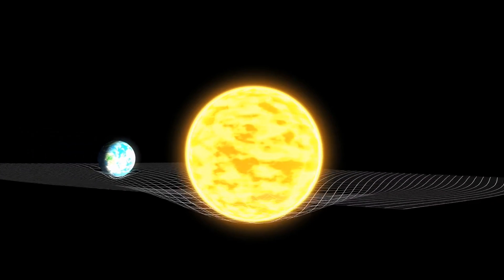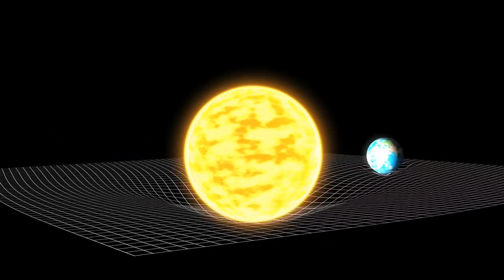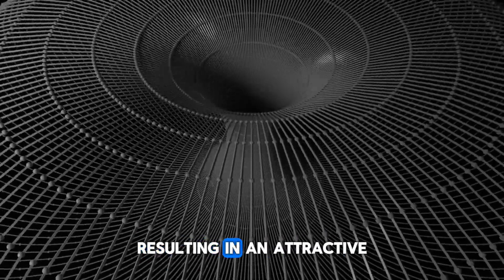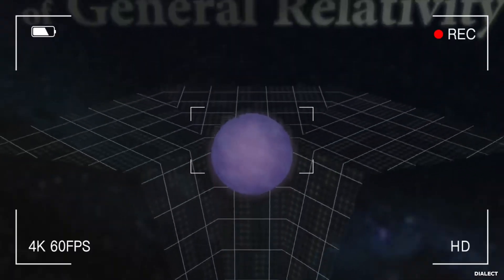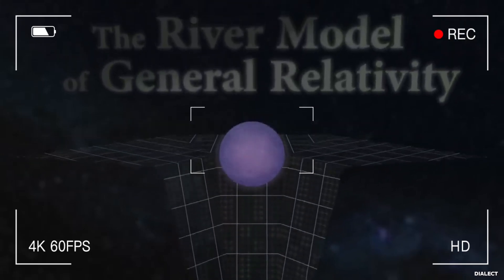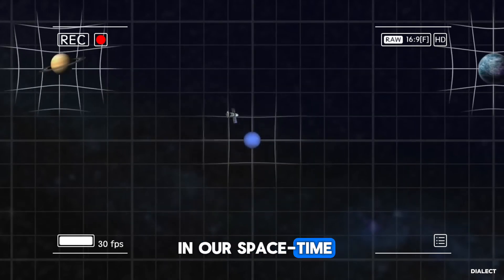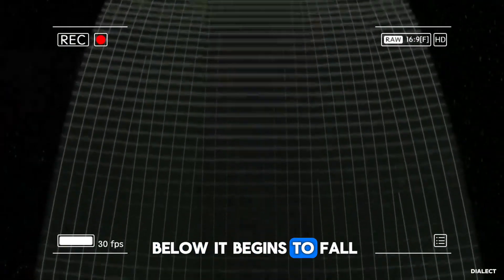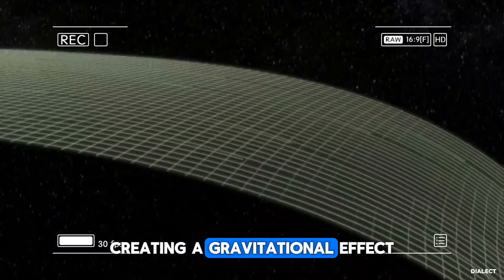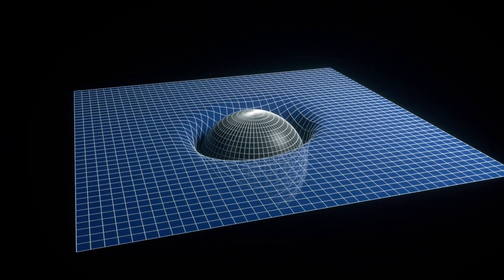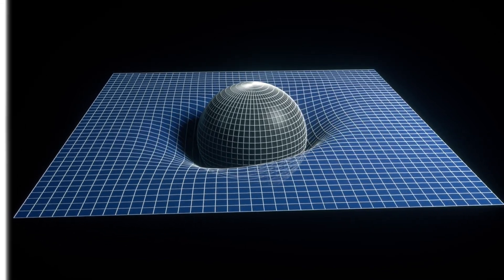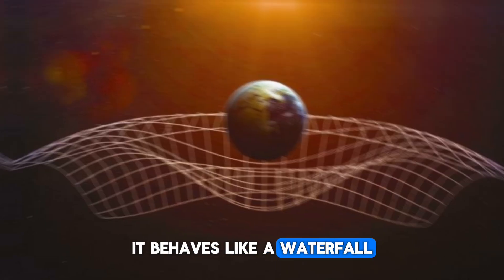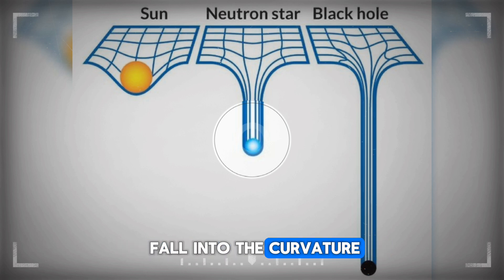When a massive object curves the spacetime around it, the objects in this curved spacetime experience a change from straight free fall to curved free fall. Due to this curvature, the direction of the fall aligns towards the center of mass, resulting in an attractive force that we recognize as gravity. An alternative analogy, the river model of general relativity, offers a simplified perspective. In this model, when a curvature forms in our spacetime, the pit itself falls into the curvature because the spacetime below it begins to fall along with the objects.